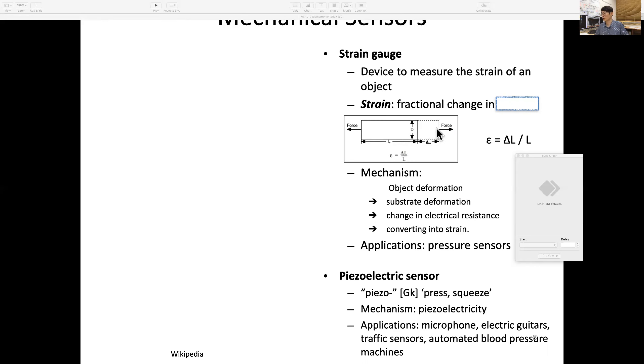It elongates based on the original length L, with a change ΔL. The fractional change in length is unitless—that's defined as strain. You see strain as ε = ΔL/L₀.